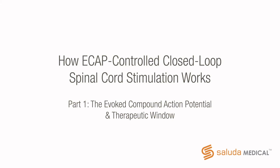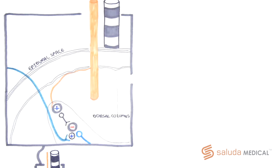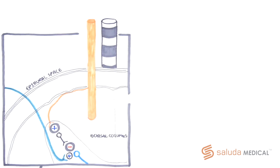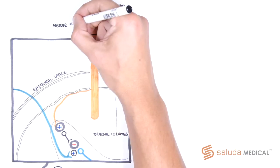This video is part 1 of how closed loop spinal cord stimulation works. It follows on from the video how spinal cord stimulation works, where we explain that spinal cord stimulation works by activating large diameter mechanoreceptors in the dorsal columns of the spinal cord.